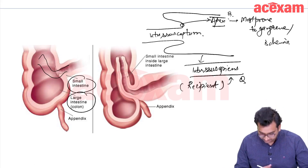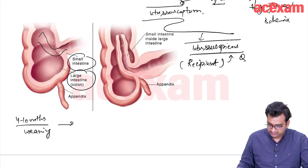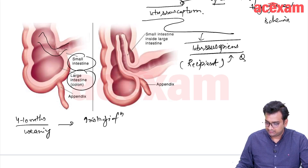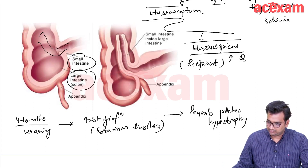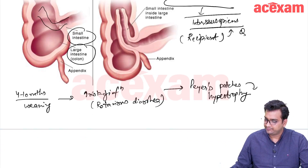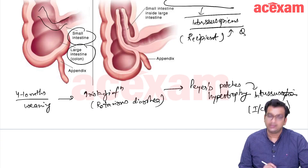The hypothesis is that in 4 to 10 months, at the time of weaning, there is increased risk of infection or rotavirus diarrhea, leading to Peyer's patches hypertrophy and then intussusception, which is generally the ileocolic type.